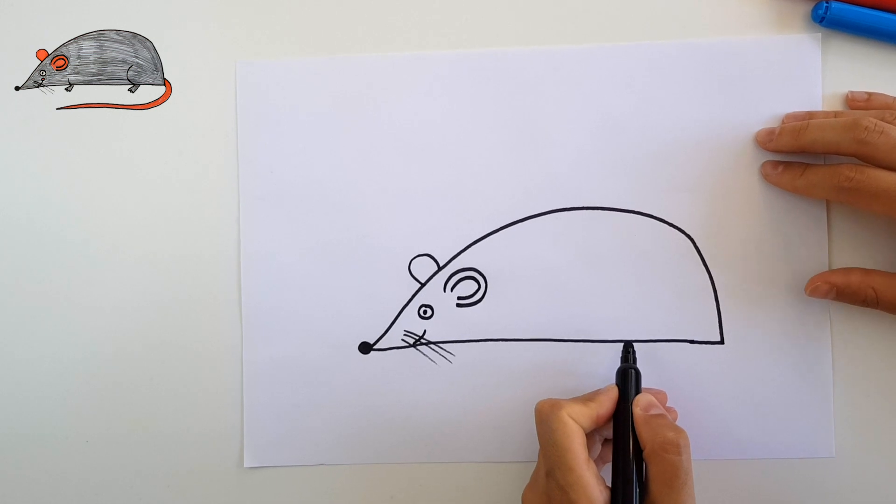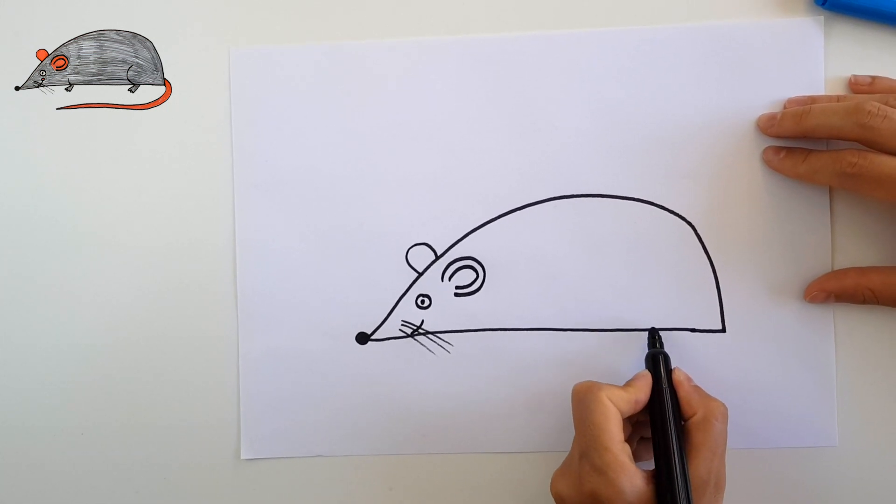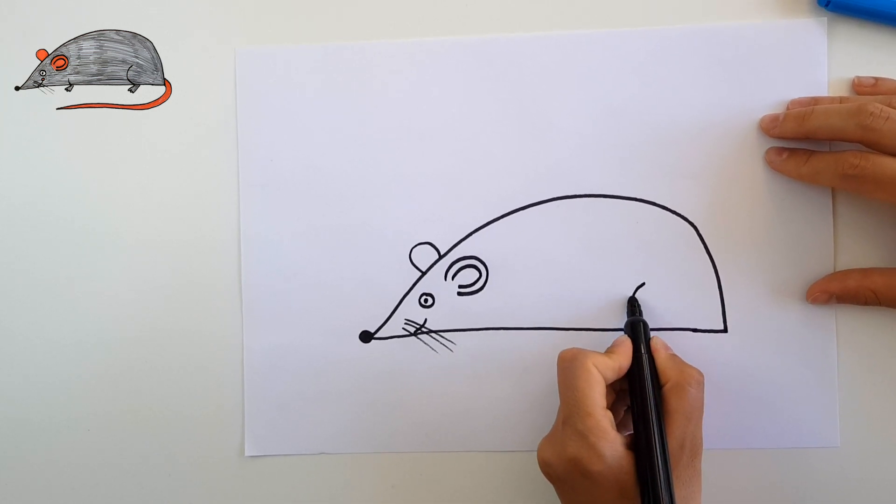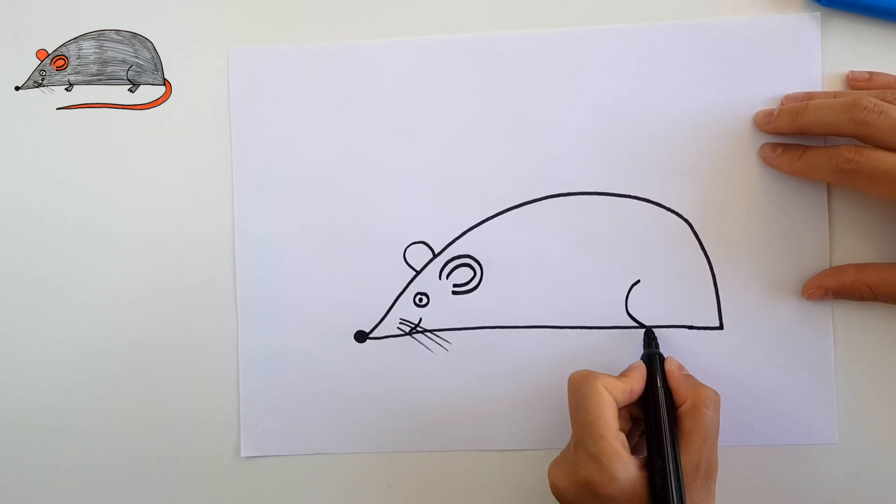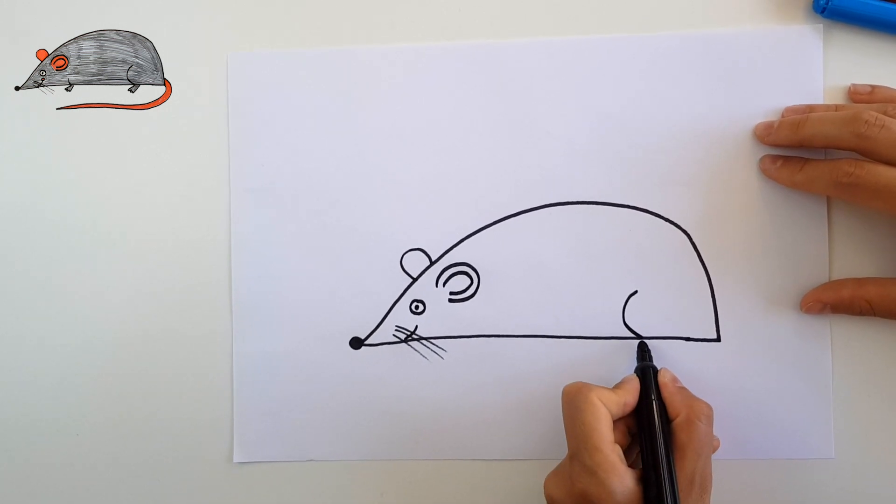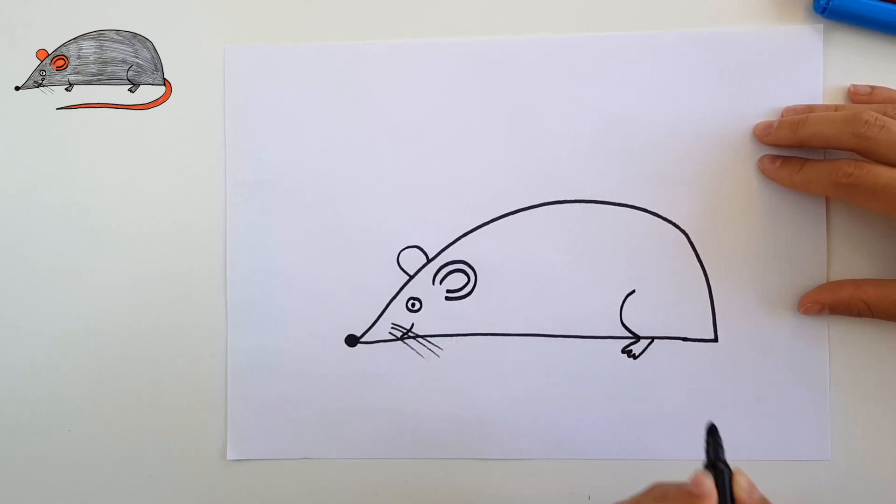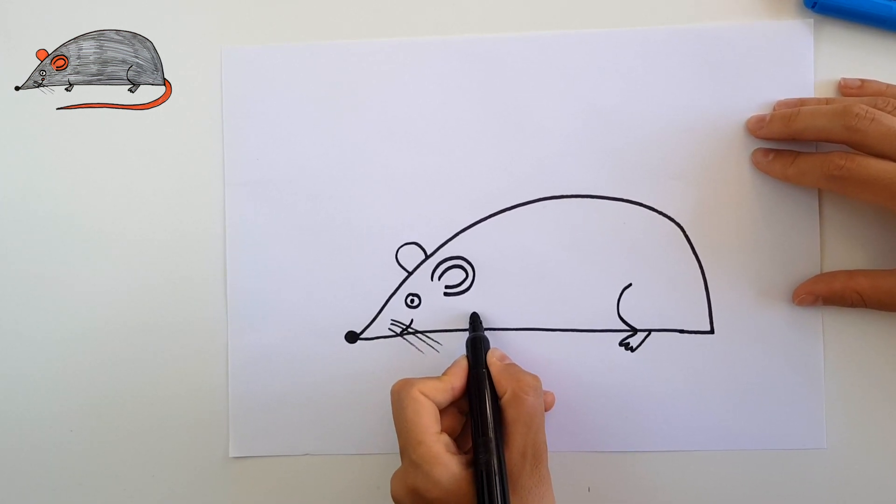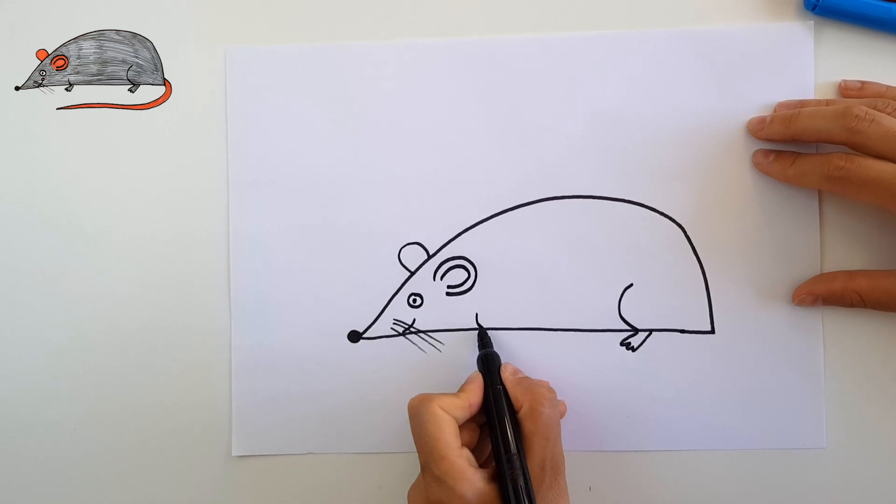Let's now draw the legs. The back leg is a bit bigger than the front one. And the front one here. I will draw back some more craft lines.